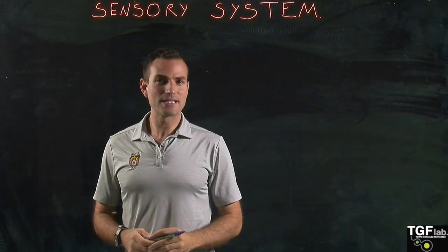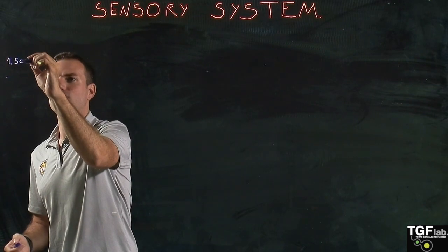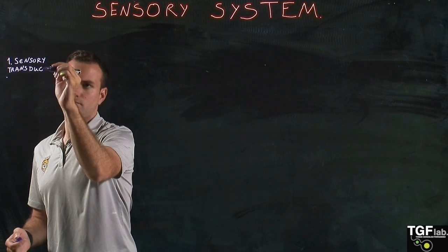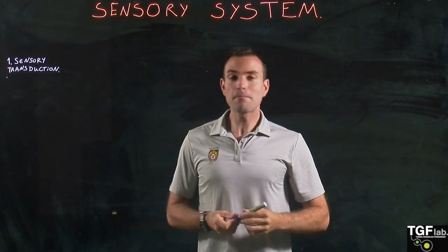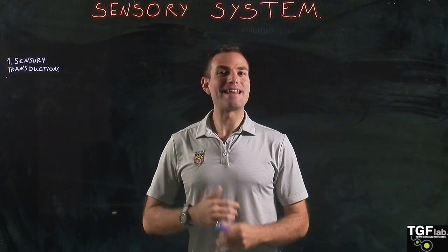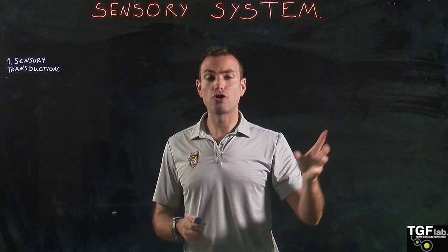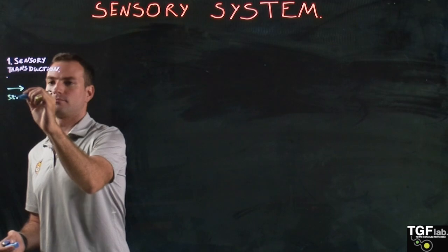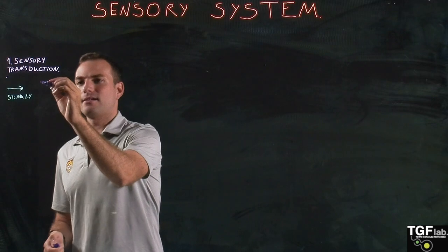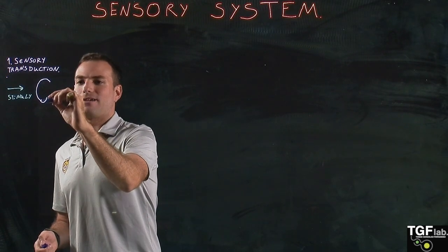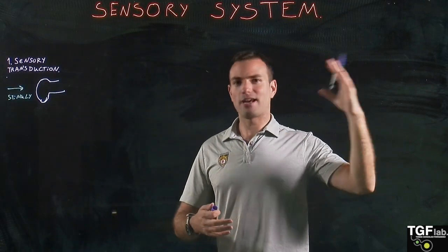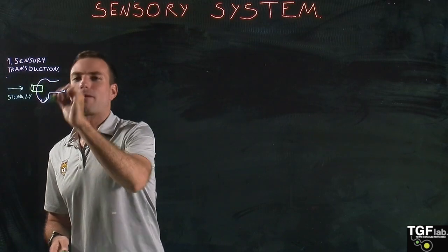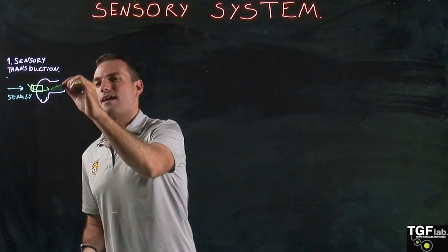The first stage of the process is called sensory transduction. The most important element of sensory transduction is the receptor, which can be a receptor cell that will transmit the stimuli into a neuron, or it can be a neuron itself. The stimuli activates the receptor and changes the permeability of the ionic channels, producing a change in the membrane potential.